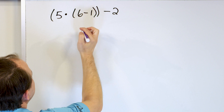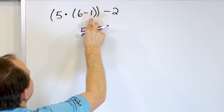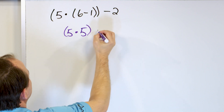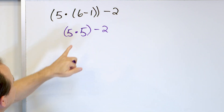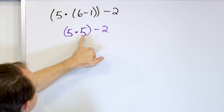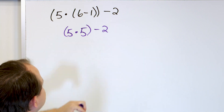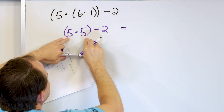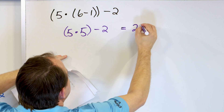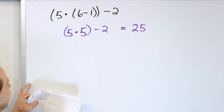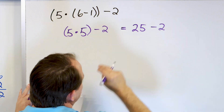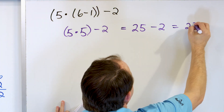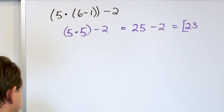So 6 minus 1 is really going to be the first thing to do. 6 minus 1 is 5. I can drop this set of parentheses, but I still have to multiply by 5 and I still have the outermost set of parentheses. The 6 minus 1 became 5. Now I do 5 times 5, which is 25. I still have the minus 2. 25 minus 2 is 23. 23 is the final answer.